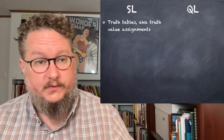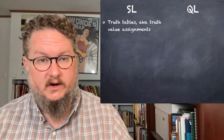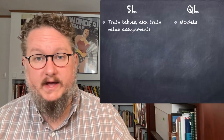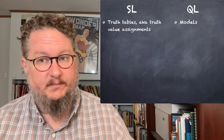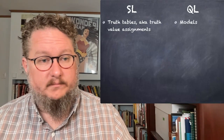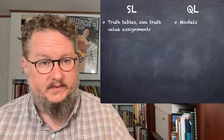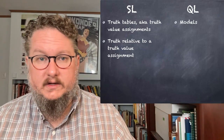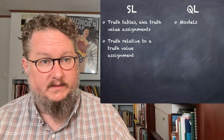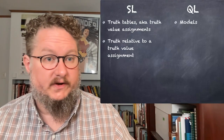In SL, you'll remember we use truth tables, also known as truth value assignments, to determine the truth value of complex expressions. In QL, we use models. They play the same role. We can't use truth tables because of the relation between predicates and objects and terms — there's too many things going on for truth tables.